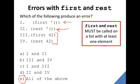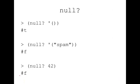As a reminder, first and rest must be called on the list with at least one element. So how do you make sure that a list has at least one element? You can use the function null. So null called on an empty list, this here is an empty list, will return pound T or true.